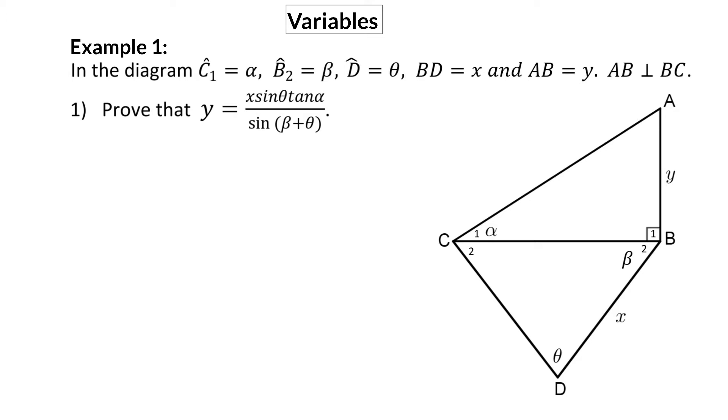In the diagram, angle C1 is alpha, B2 is beta, angle D is theta, side BD is x and AB is y. Side AB is perpendicular to BC, and we are asked to prove that y equals x times sin theta times tan alpha divided by sin of beta plus theta.